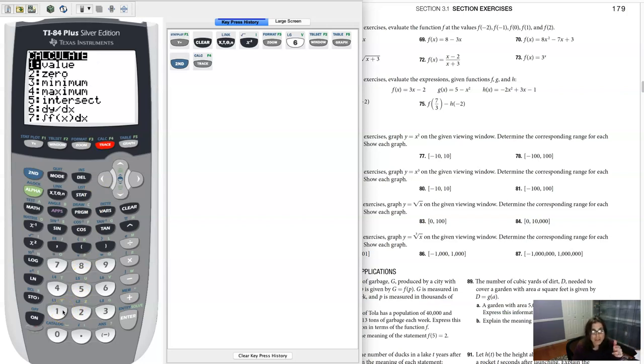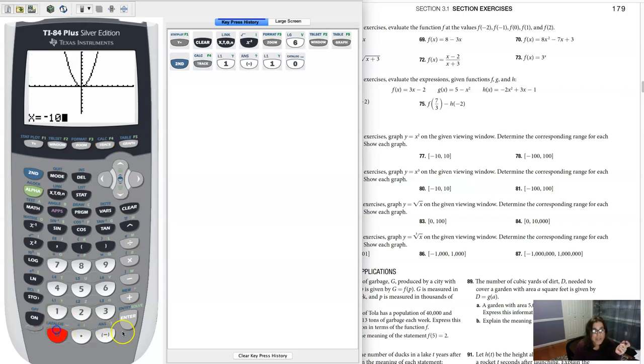hit second calc, or second in the trace button, it'll activate the calculation screen, and let's just plug in a value. So if I plug in negative 10, you see I'm getting a hundred there for my y value.